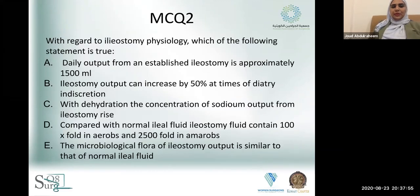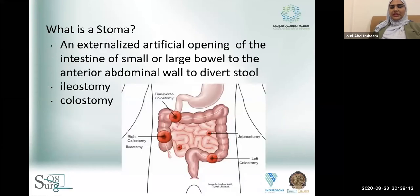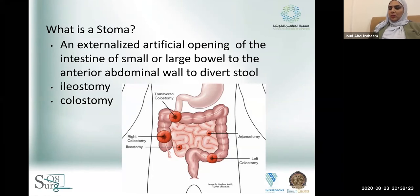The next part of the lecture is about stoma care. A stoma is an externalized artificial opening of the intestine — whether small or large — to the anterior abdominal wall, to divert stool. If it's in the small bowel, we call it an ileostomy; if it's in the large bowel, we call it a colostomy. Bear in mind that a stoma can be done at any level, but there are preferred levels to serve a clinical purpose.